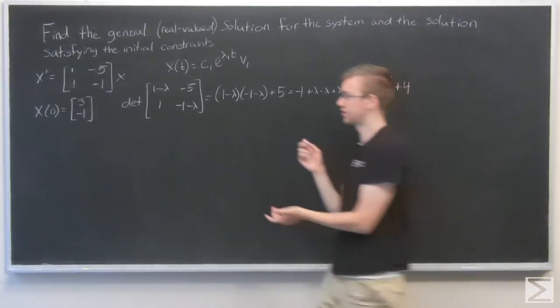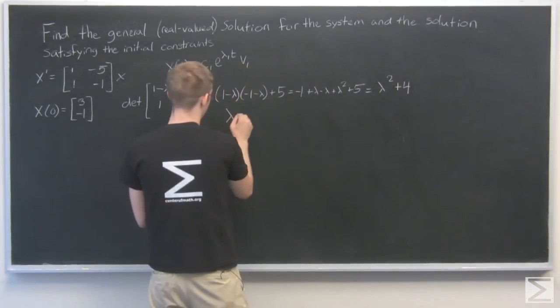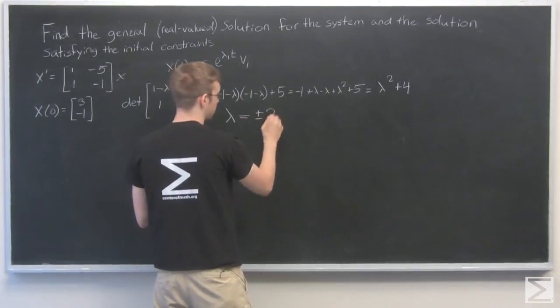Lambda squared plus 4, if we set that equal to 0, that gives us our lambdas equal plus or minus 2i.